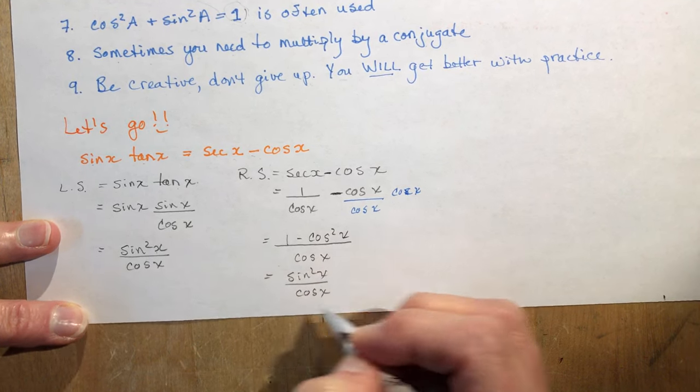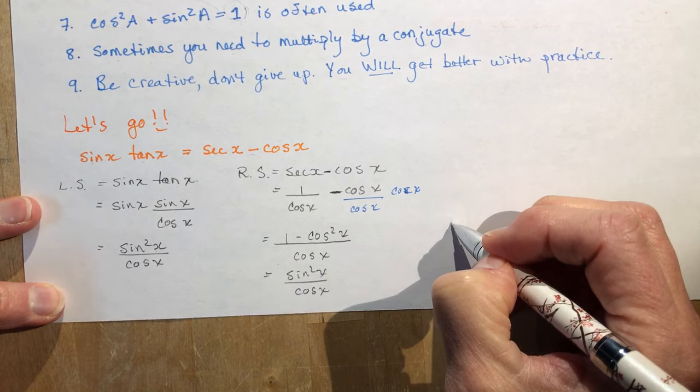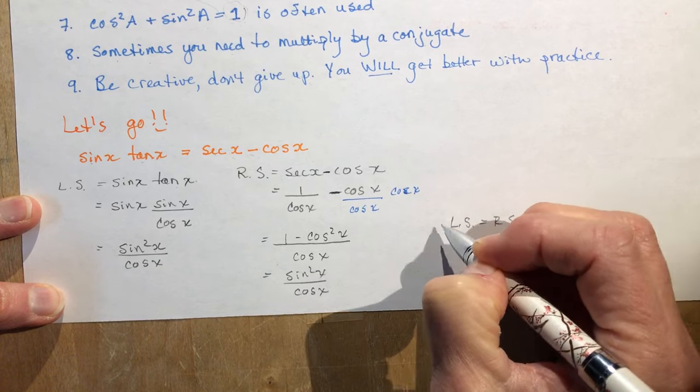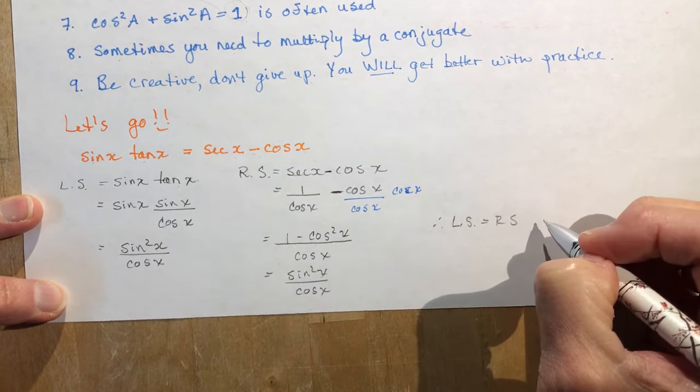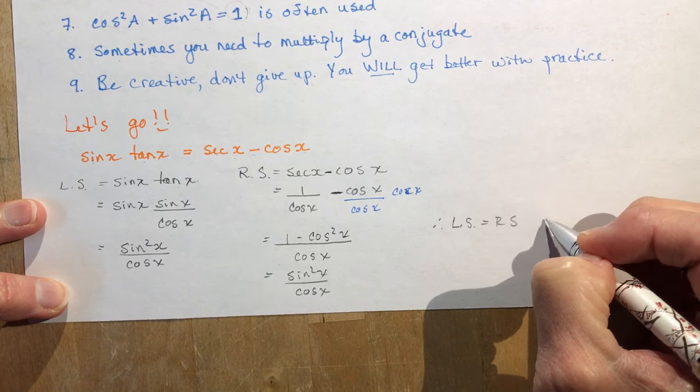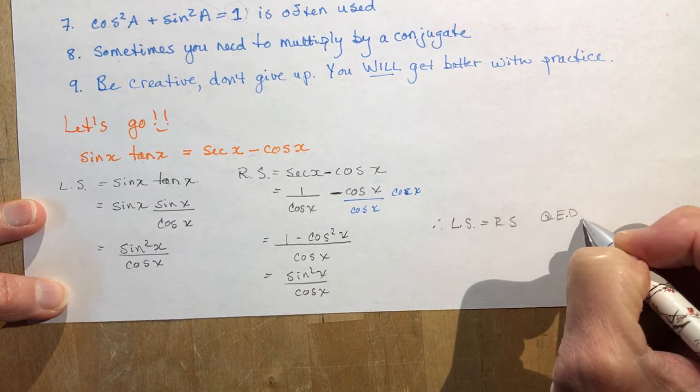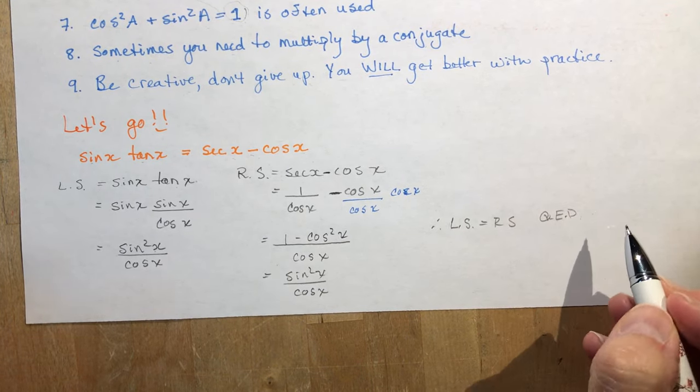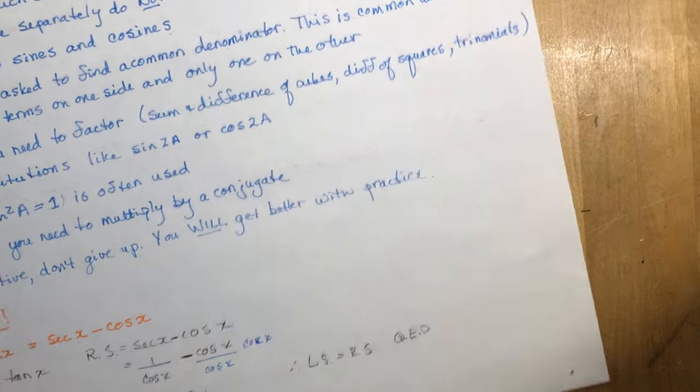Now I don't know what your teacher asked you to write once you're finished. In my class, I would have had them just say left side equals right side. And you can either rewrite this saying that they're equal. I also used to get my students to write QED, which means quod erat demonstrandum. Therefore, it has been proven. Maybe you want to see if your teacher will let you get away with that quick little short form.